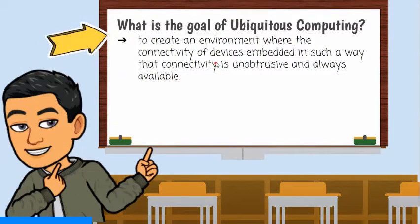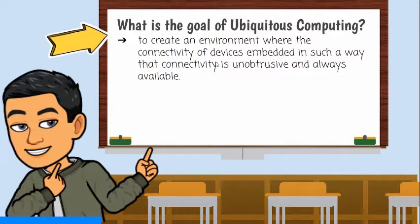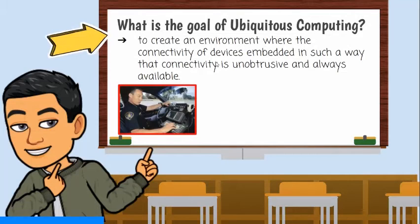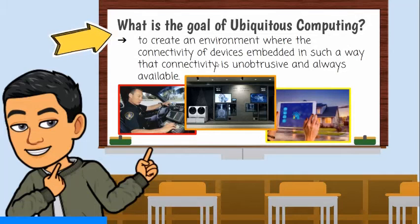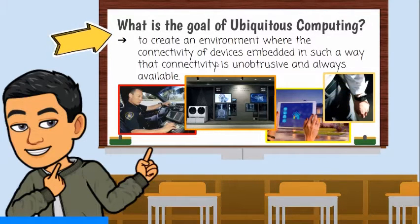The goal of ubiquitous computing is to create an environment where the connectivity of devices is embedded in such a way that connectivity is unobtrusive and always available. Such devices' characteristics may be very tiny, small, inexpensive, and robust network processing. It is either mobile or embedded in almost any type of objects such as cars, tools, appliances, clothing, and various consumer goods, all communicating through increasingly interconnected networks.